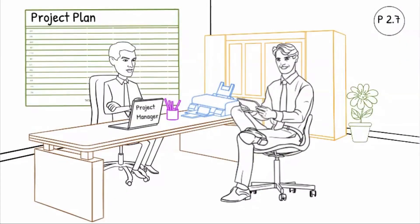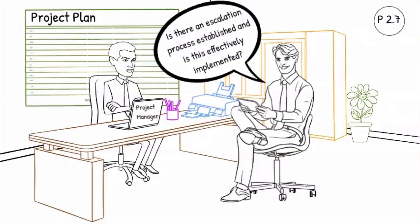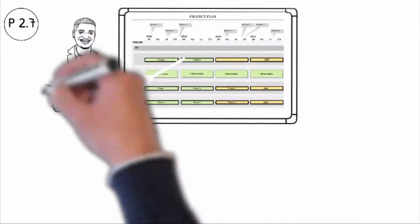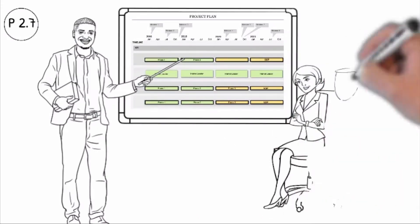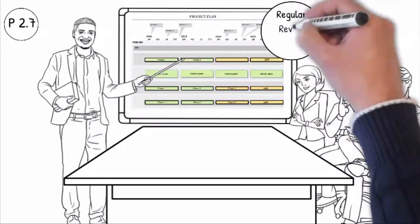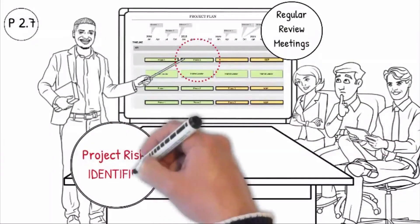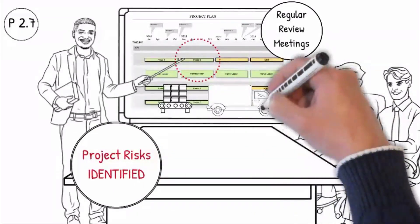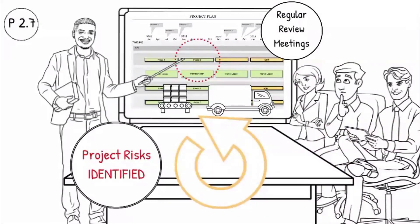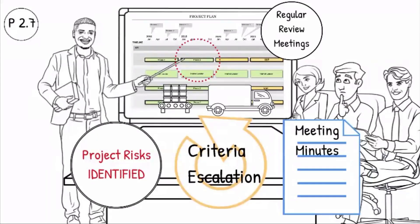Question P2.7: Is there an escalation process established and is this effectively implemented? Regular project review meetings are scheduled to review the project milestones and the budget. During the project review meetings, each team member must present the status of their work breakdown activities and highlight all risks related to technology or supplier which might impact the overall success of the project. The criteria for escalation are defined, responsibilities and authorities are regulated, and measures are established when deviations occur. Milestone review meeting minutes including escalation measures are communicated to all stakeholders to ensure they are informed.